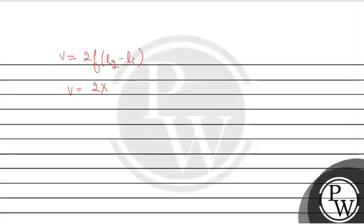So simply putting this value, V is equal to 2 times frequency which is 320 into L2 is 0.73 m minus L1 is 0.20 m. So it will be 640 into 0.53.